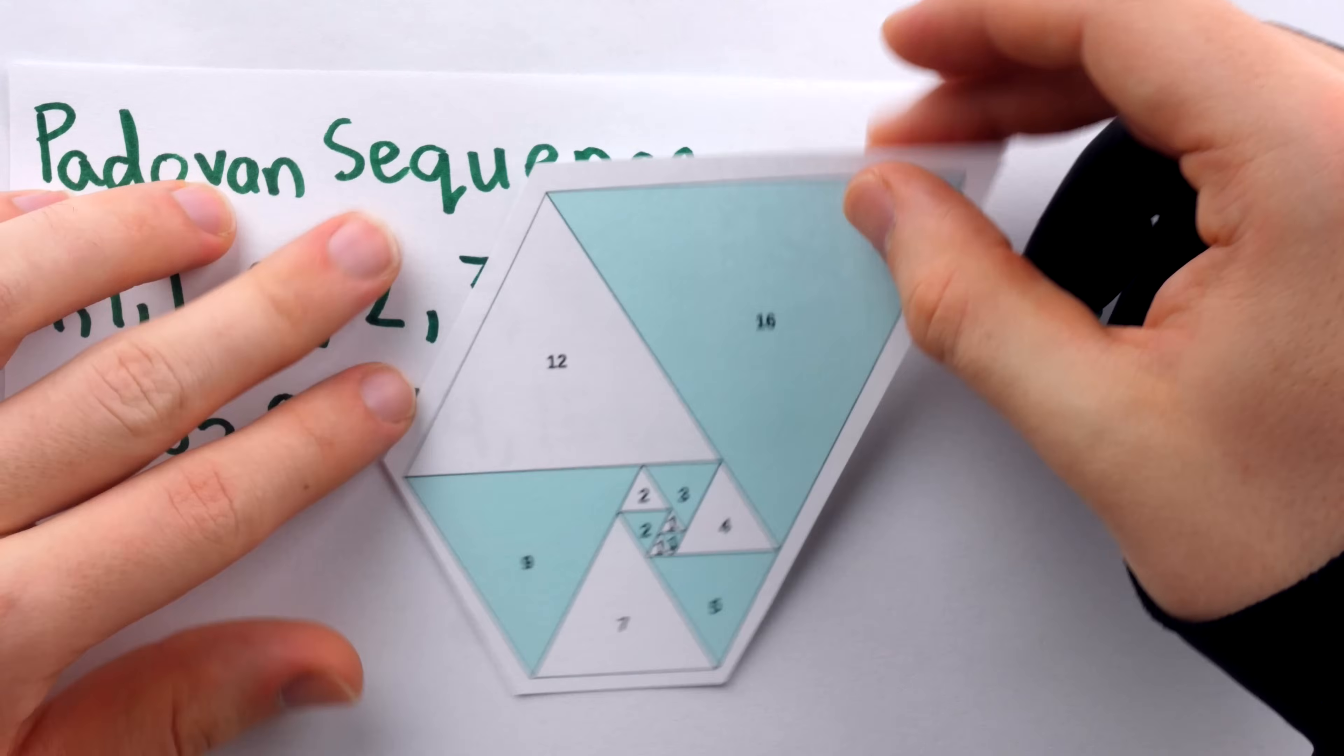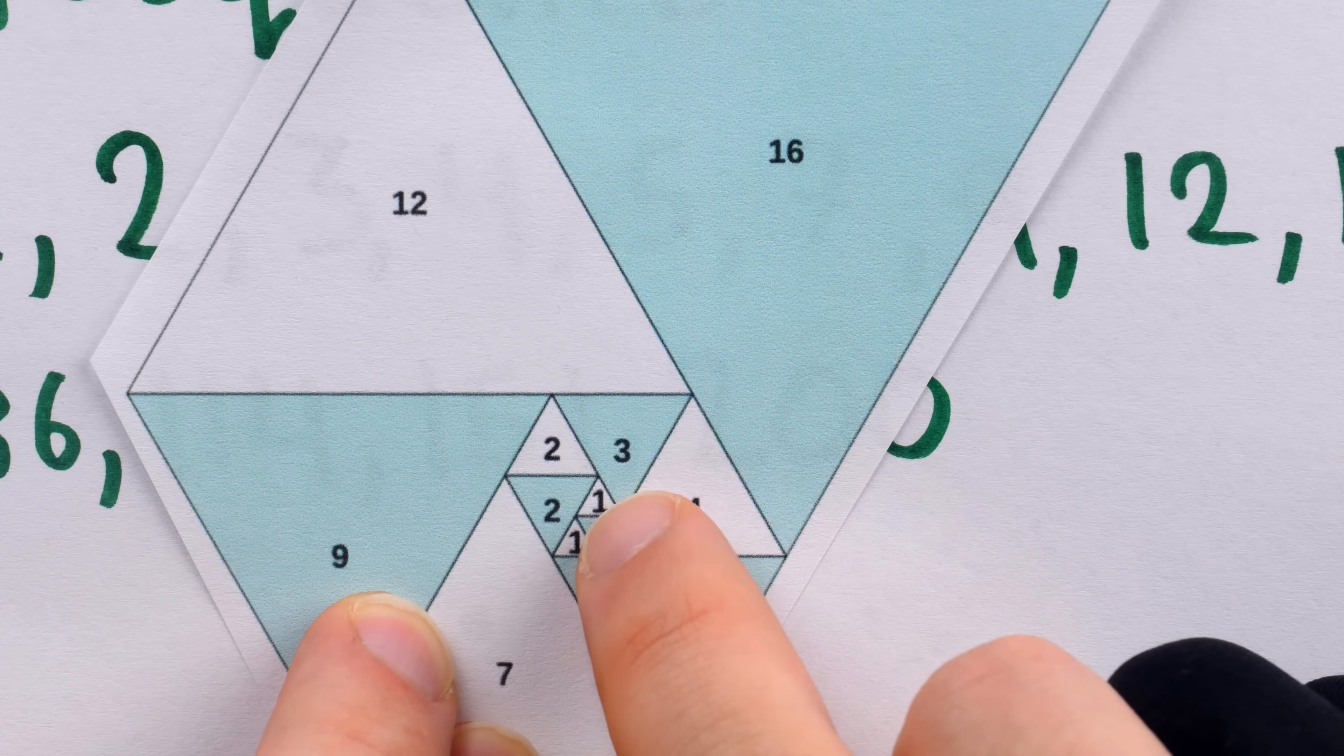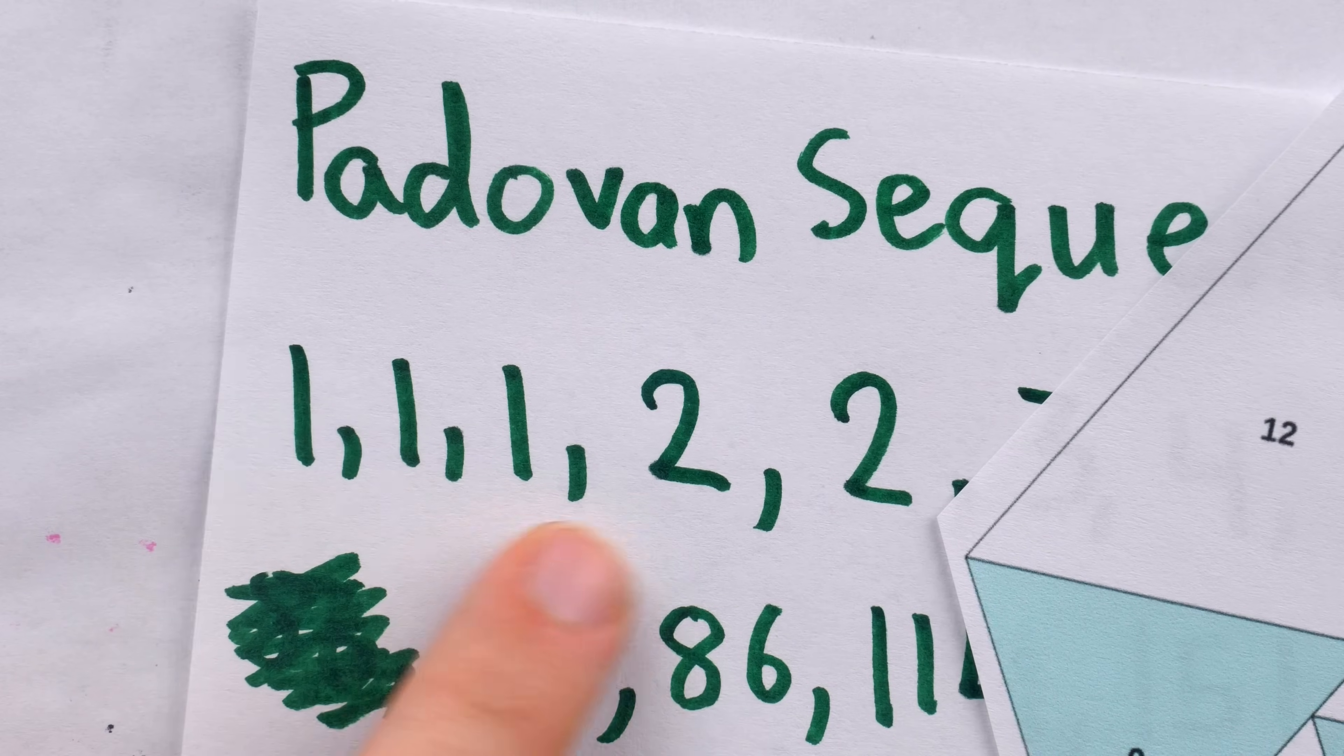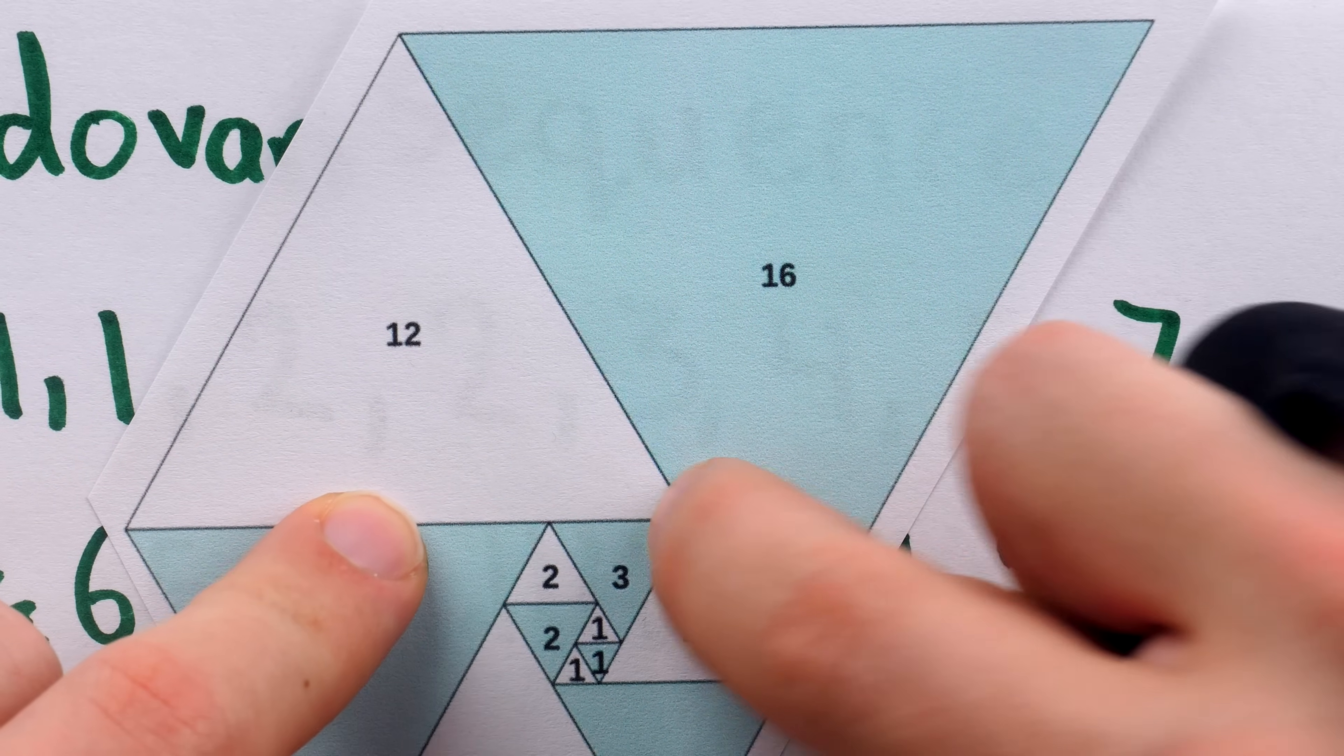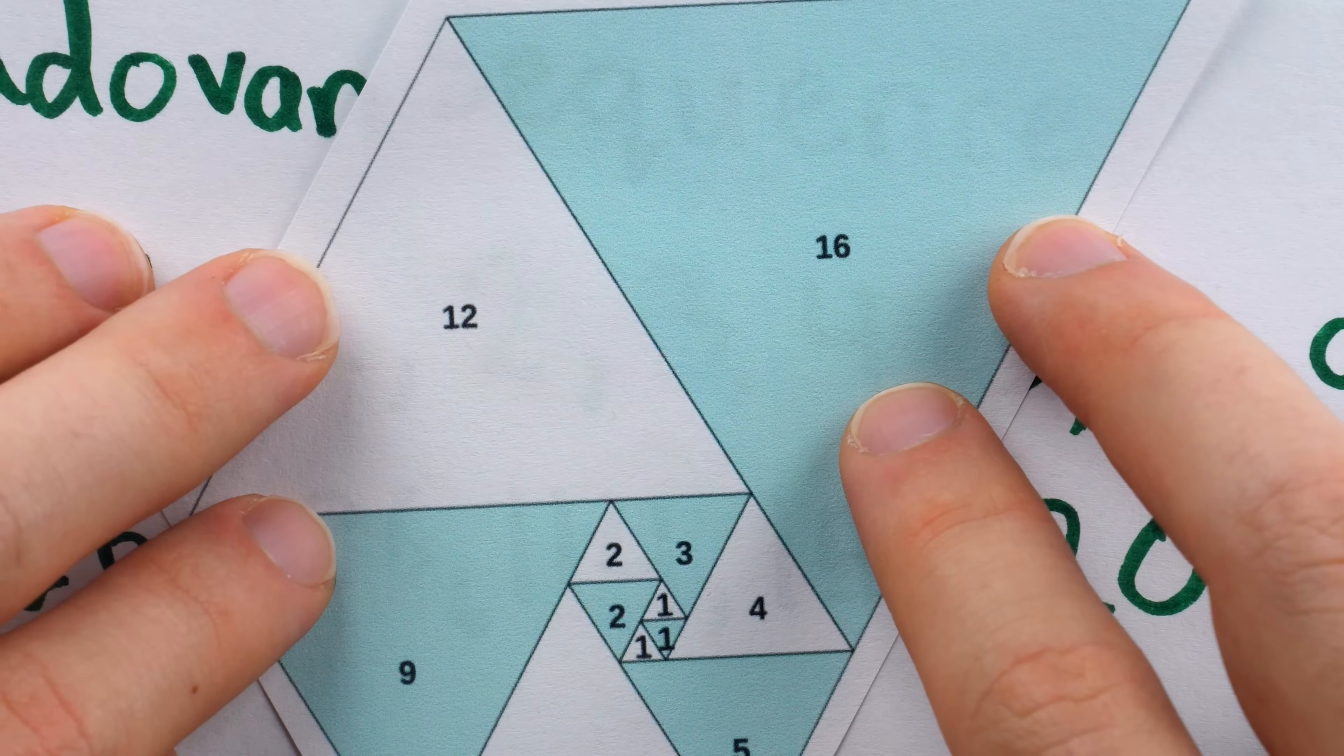And this sequence has a beautiful spiral of its own built out of triangles. You can see those first three terms represented as equilateral triangles with side lengths of one, and then after those first three terms, the next term is a 2, and we see that triangle there, that 2. And then they continue building out. There's the 2 triangle, and the 3, and the 4, and the 5, and the 7, and so on. It's pretty cool.